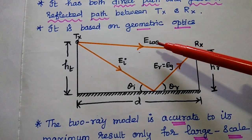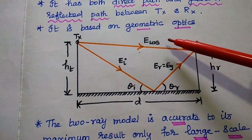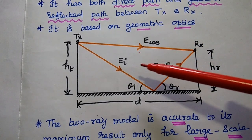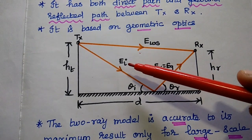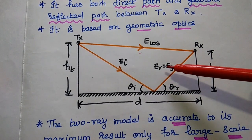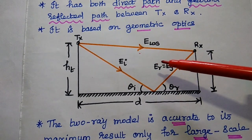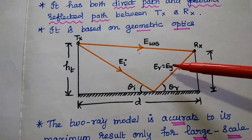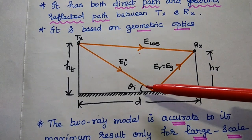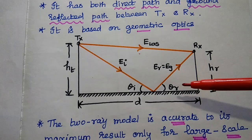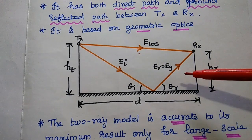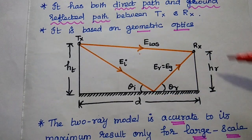In this model, ELOS represents the electric field of the line of sight. EI is the electric field of the incident wave. ER equals EG, that is the reflected wave field, considered as a ground reflected wave. In general, theta I is the incident angle and theta R is the reflected angle of the signal.